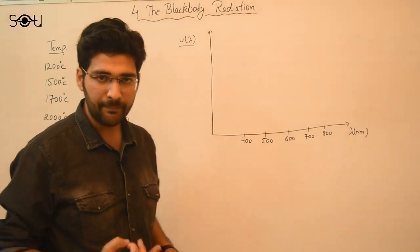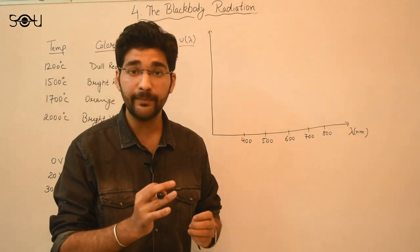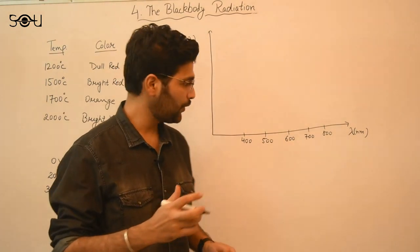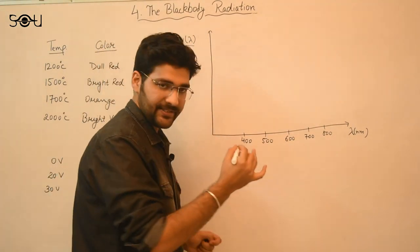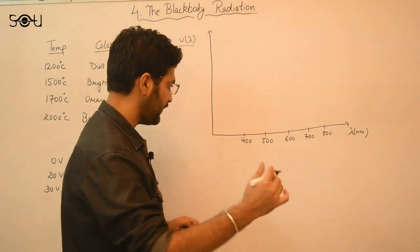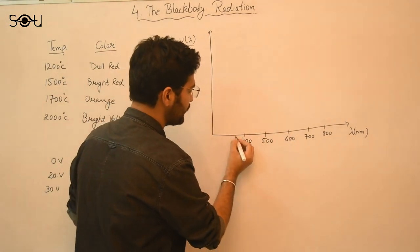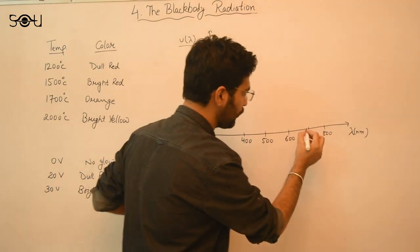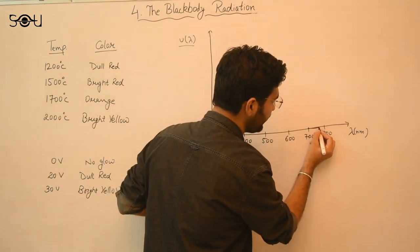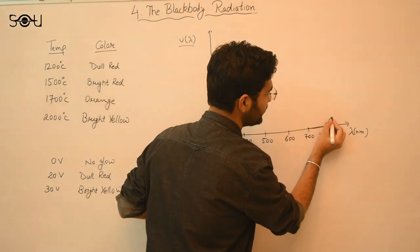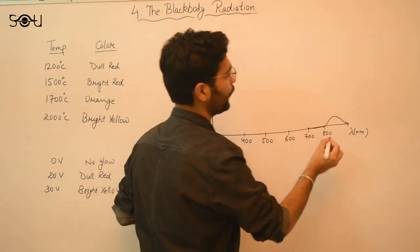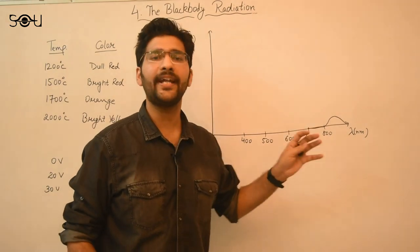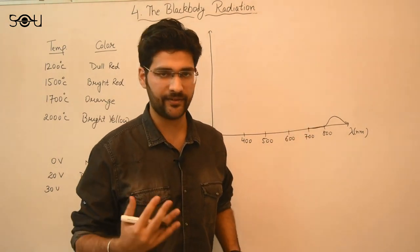When I brought that metal piece into the dark room, it was emitting in the infrared region — we could not see it with the naked eyes. So the peak intensity of the radiation was in the infrared region. At room temperature, there is no glow in the visible range, and then beyond 800 nanometers, the intensity of the radiation peaks in the infrared region.